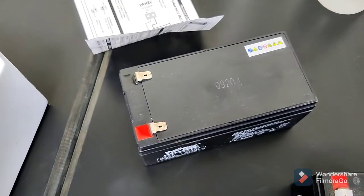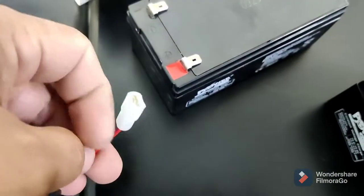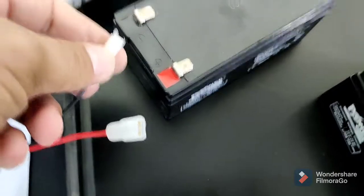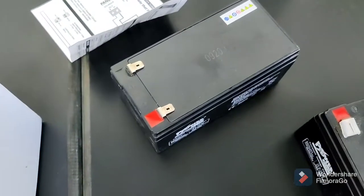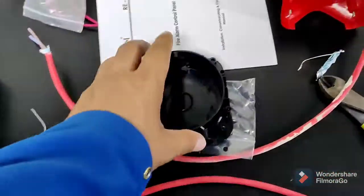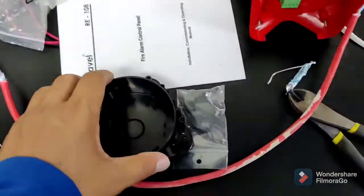Like red color wire we will connect to the positive side, and black wire to the negative side. You can see this is the sounder.